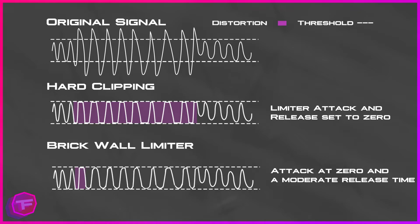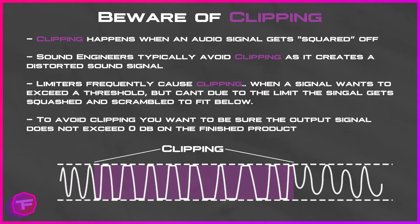If you set a limiter with a moderate attack and release, you'll see the audio fade from louder to quieter within the threshold at a slower rate, causing a gradual change without distorting the audio at all. Clipping happens when an audio signal gets squared off. Sound engineers typically avoid clipping as it creates a distorted sound signal. Limiters are frequently the cause of clipping when a signal wants to exceed a threshold but can't, causing it to get squashed and scrambled, causing clipping.